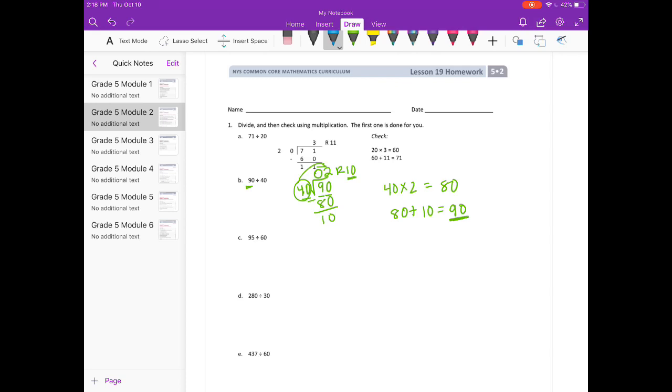95 divided by 60. So 60 can't go into 9, but 60 goes into 95 one time. 1 times 60 is 60. We subtract, we get 35. So our answer is 1 remainder 35.